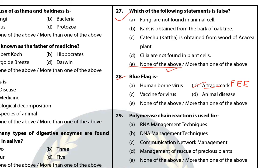Question 29: Polymerase chain reaction is used for? The answer is B — DNA amplification technique. Polymerase chain reaction is an in-vitro DNA management technique. Under this, millions of amplified copies of a particular segment of a gene are produced using a specific DNA polymerase enzyme.